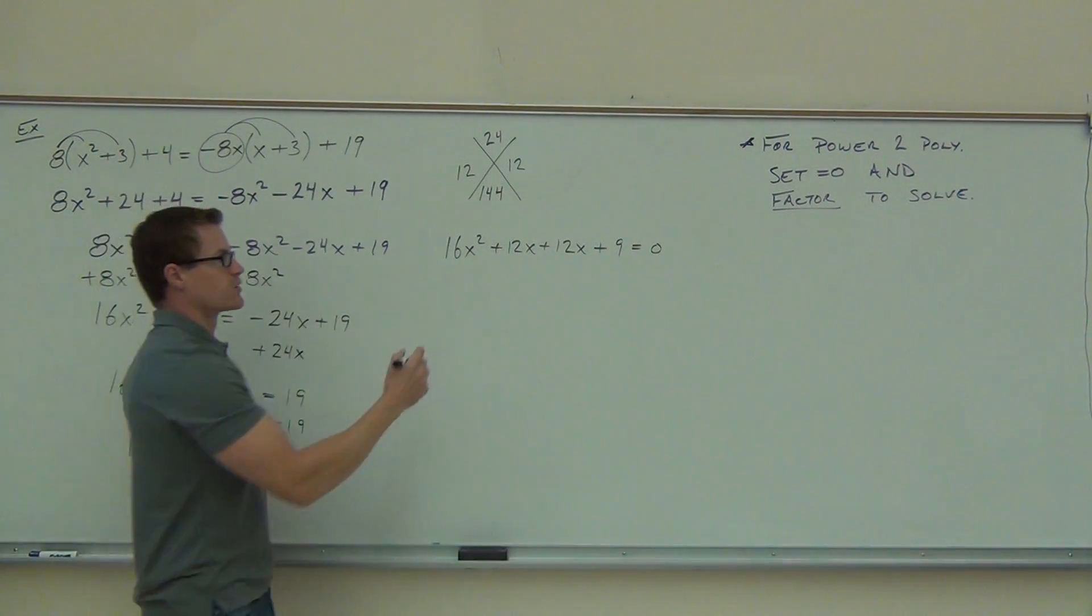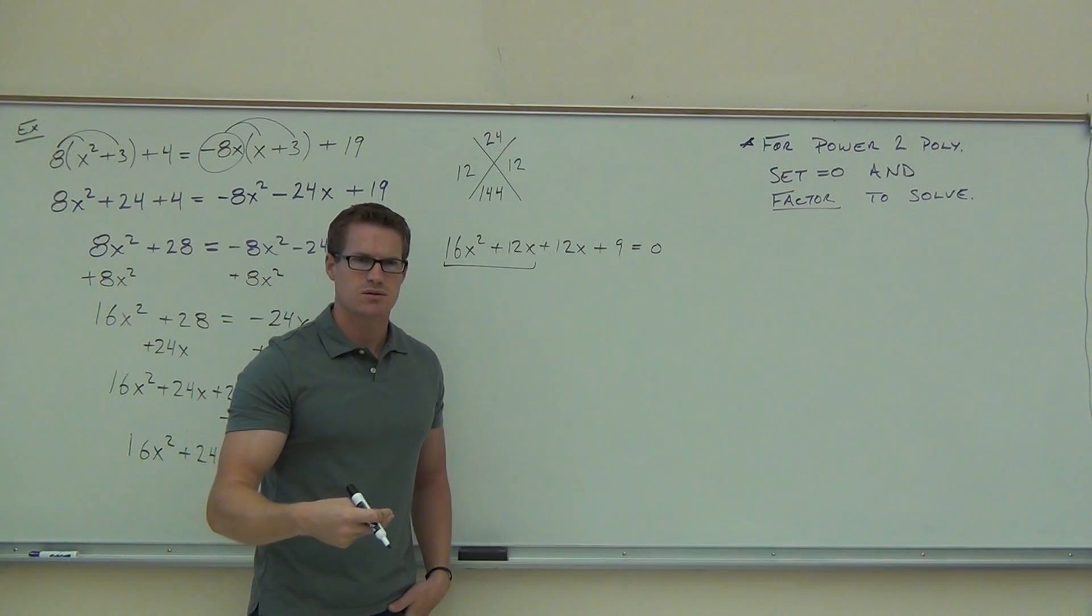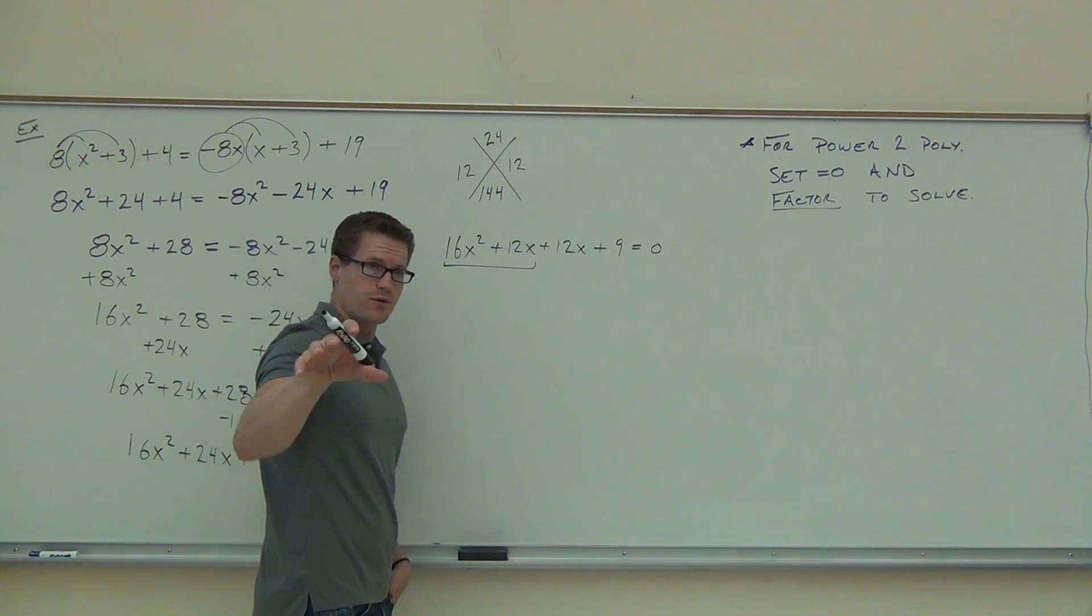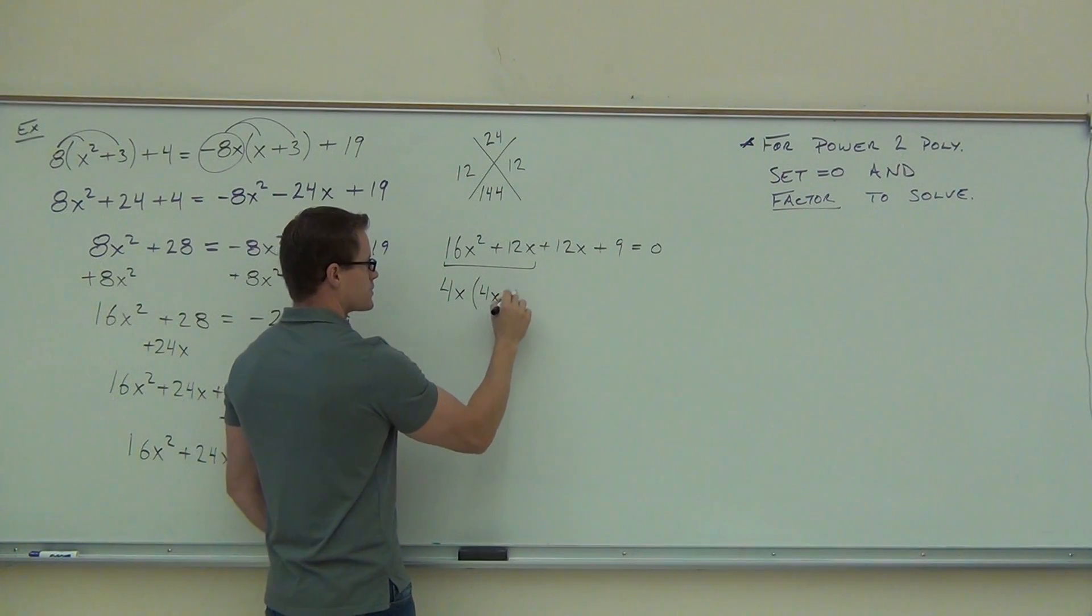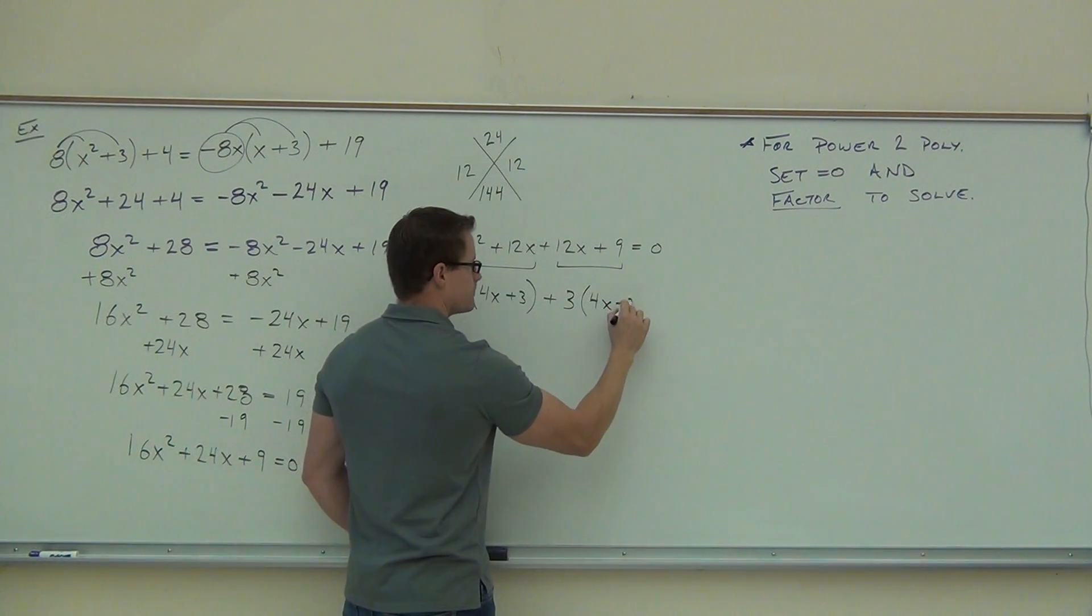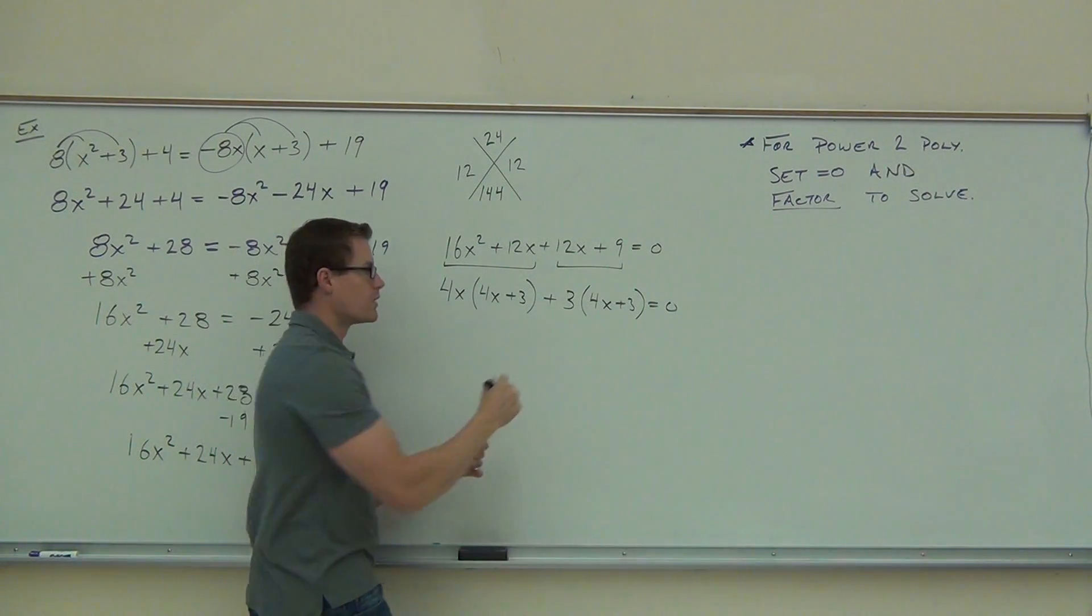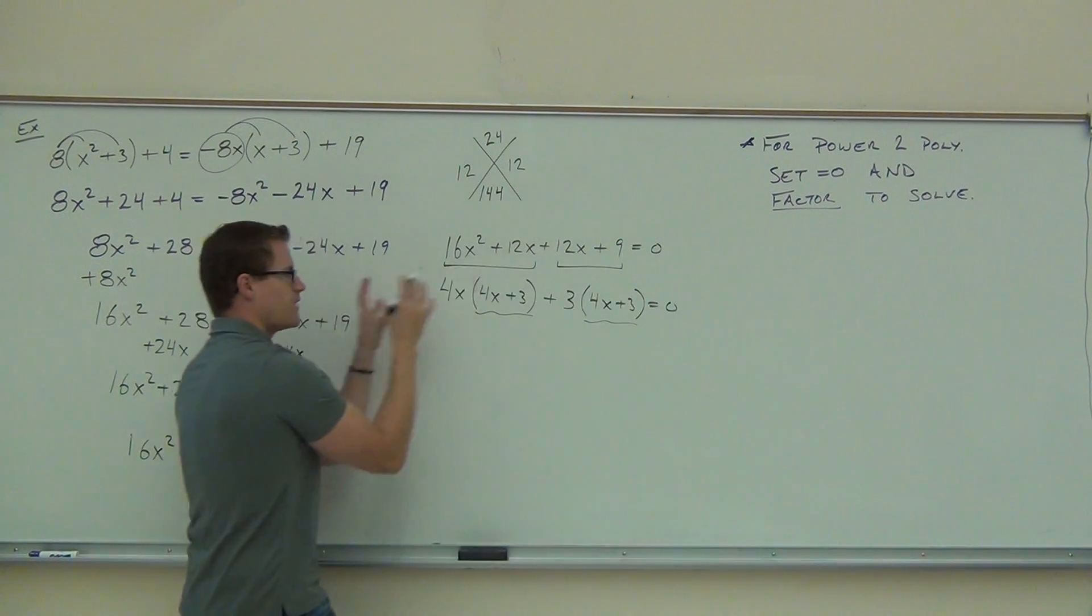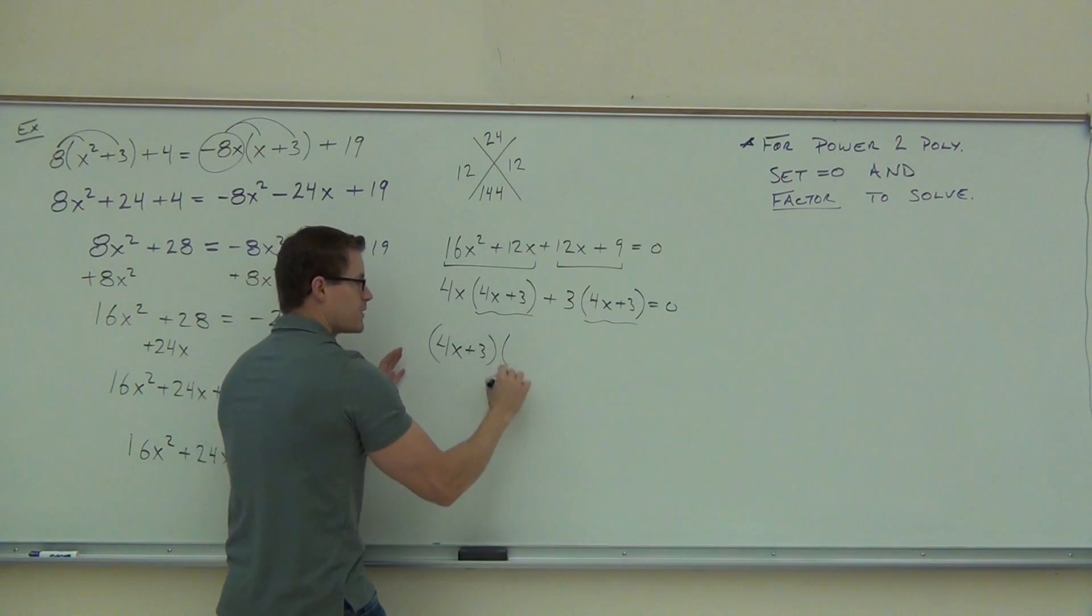This lets us do our factor by grouping. Are you starting to get that down, that factoring by grouping? Is it starting to really make sense to you? I hope it is. If it's not, come and see me or review this lesson online and you can see this over and over again. We'll get our 4x out of that. We should get a 4x + 3. And on the right hand side we're going to factor out exactly and get a 4x + 3. Again, we've done it right because we have exactly the same thing here and here. That's perfect. So we're going to take this piece and this piece and factor that out.